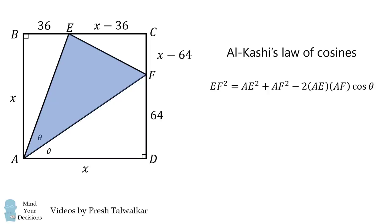So, EF squared is equal to AE squared plus AF squared minus 2 times AE times AF times the cosine of theta. Now, in triangle AFD, we can calculate that the cosine of theta is equal to X over AF. If we substitute that into the formula, we can then cancel out the AF term, which simplifies to the following form.